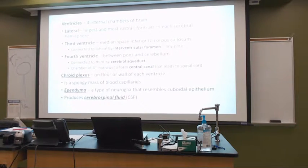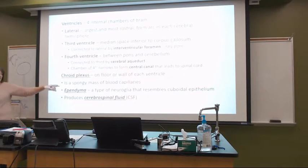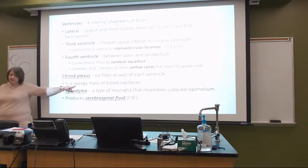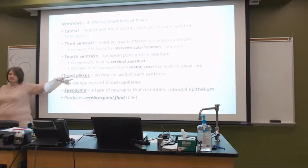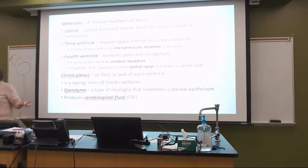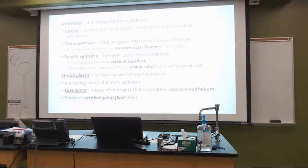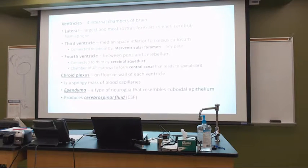Here, for the choroid plexus, it's a spongy mass of blood capillaries. We haven't talked about blood vessels. What do the capillaries allow to happen? The exchange of nutrients. My exchange of materials.